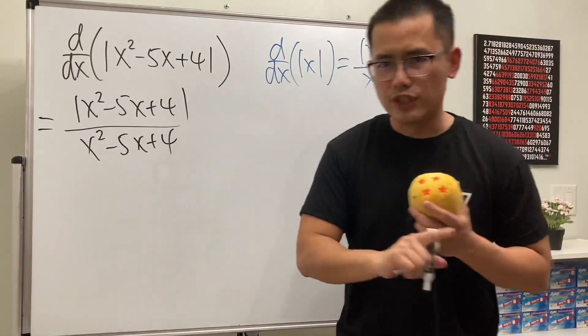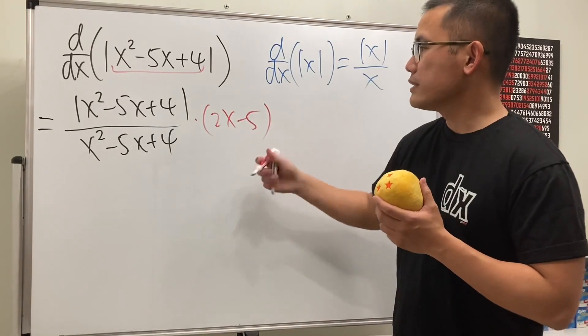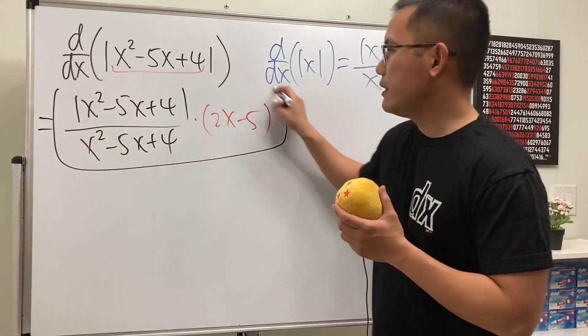And of course, don't forget to use the chain rule. So we are going to multiply by the derivative inside, which is 2x minus 5. All right, so this is the derivative, and then we are done.